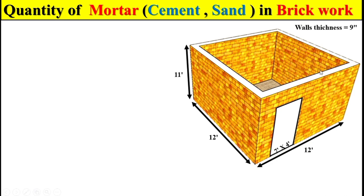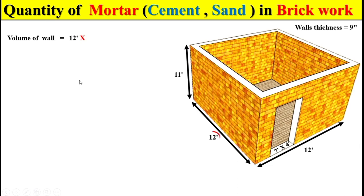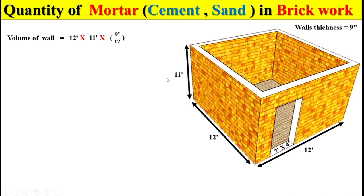To calculate the total quantity of mortar in this brickwork, first of all we calculate the total quantity of brickwork in this room. To calculate the total quantity of brickwork, we calculate the total volume of one wall by multiplying the total length, total height, and total thickness of the wall, which is 9 inches. We divide 9 inches by 12 to convert into feet, since the other two units are also in feet, and we get the total volume of one wall.